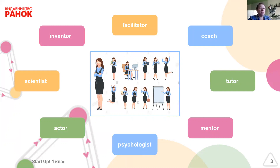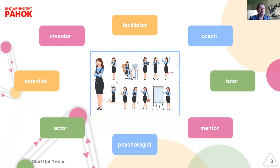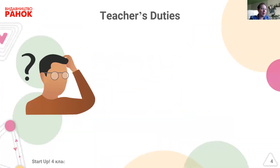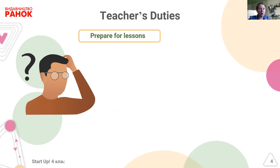Sometimes people around us forget that a modern teacher is just an ordinary person with his or her own needs. A modern teacher has a private life, and it is very difficult to have enough time for everything. Modern teachers have lots of duties. You and I have to do lots of things at school, such as prepare for our lessons.